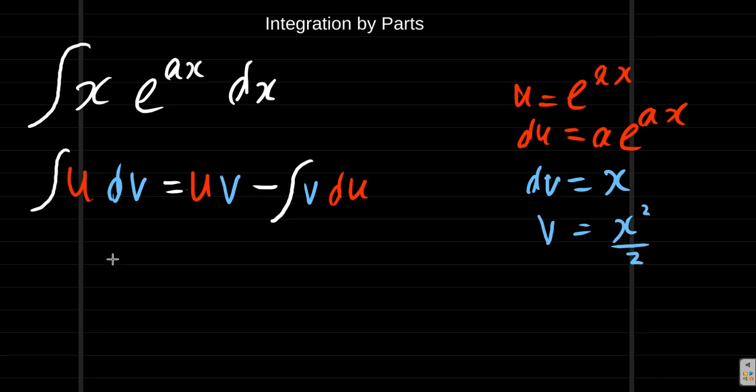What you would end up with is the integral of u v, which is e to the a x, that is u, times v, x squared over 2, minus the integral of v, which is x squared over 2, du, which is a e to the a x.